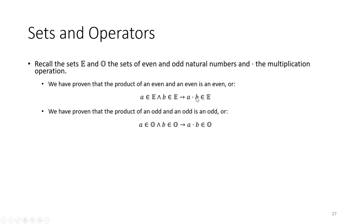As you build up your mathematical intuition and literacy, you'll be able to look at a statement like this and easily translate it back into natural language. So again: a is an even number and b is an even number implies a times b is an even number. And then the same thing stated for odds: a is odd and b is odd, and a times b is an element of O - start with two odd numbers, multiply them, and you get an odd number.